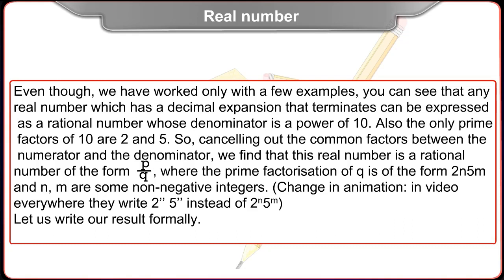So, cancelling out the common factors between the numerator and the denominator, we find that this real number is a rational number of the form P upon Q, where the prime factorization of Q is of the form 2 raised to n into 5 raised to m, where n, m are some non-negative integers.